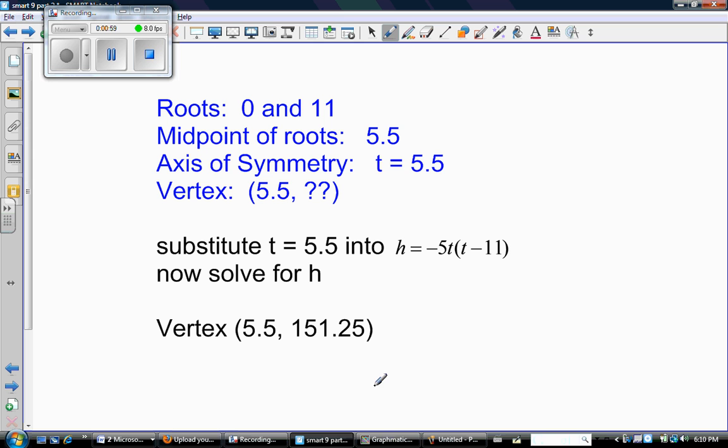So where were we? We discovered by solving and found that the roots were at 0 and 11. We took the midpoint, which was 5.5. And that means that the axis of symmetry was t equals 5.5. And it therefore means that the vertex looks like this, 5.5 comma something.